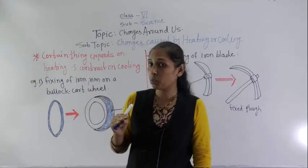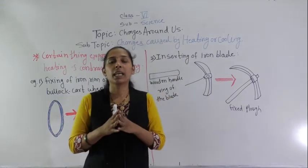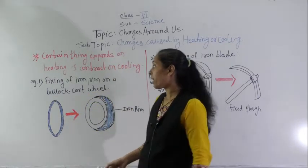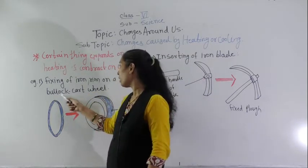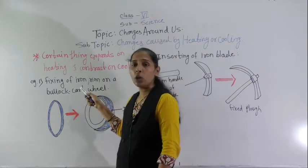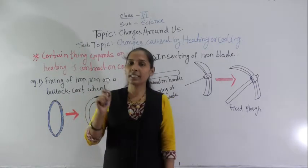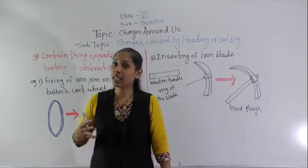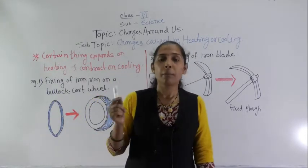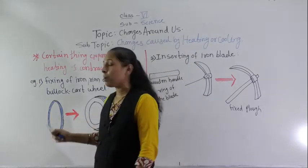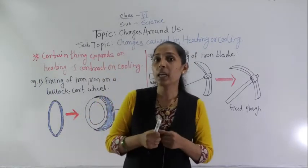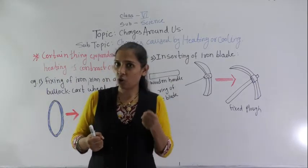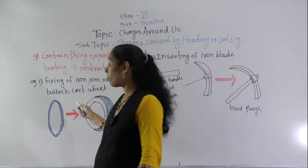Because metals can expand on heating and contract on cooling, iron is used in the wheel of a bullock cart. The bullock cart has a wooden wheel, and an iron rim is fixed on that wooden wheel to make it more durable and strong.